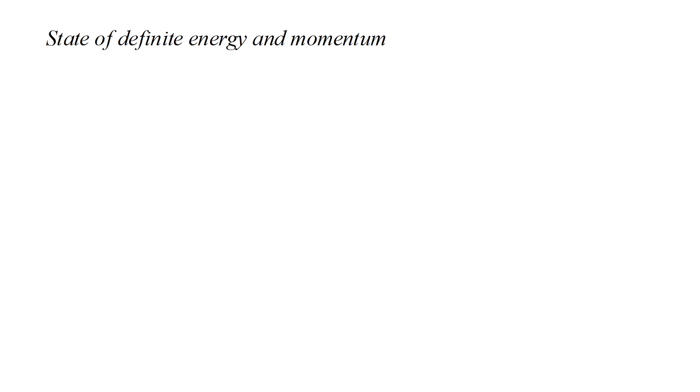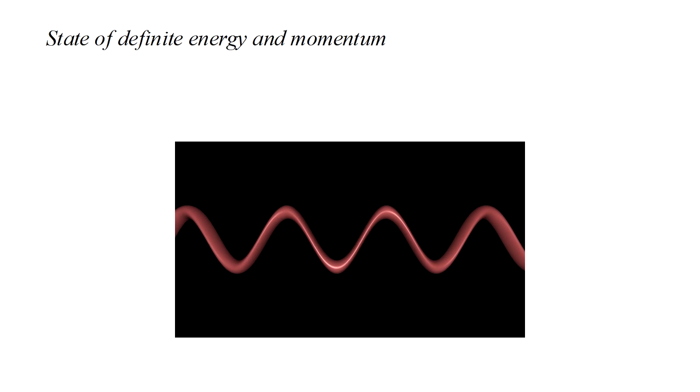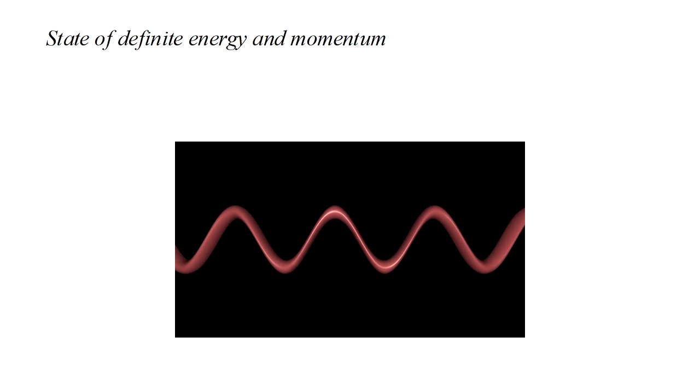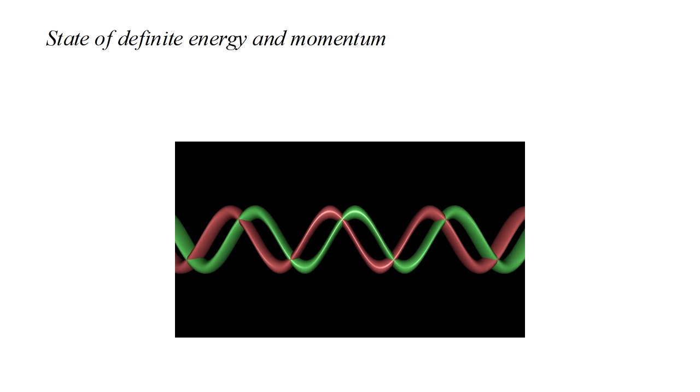Let's think of a state of definite energy and momentum. It varies sinusoidally in space, and in order to vary sinusoidally in time, the entire wave has to be moving. Looking at the left side of the image, it's clear that the wave amplitude at a given point oscillates in time.